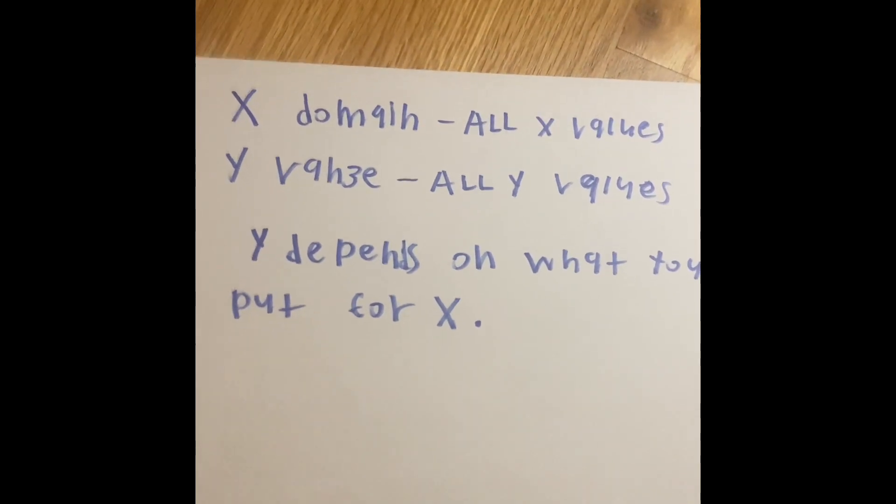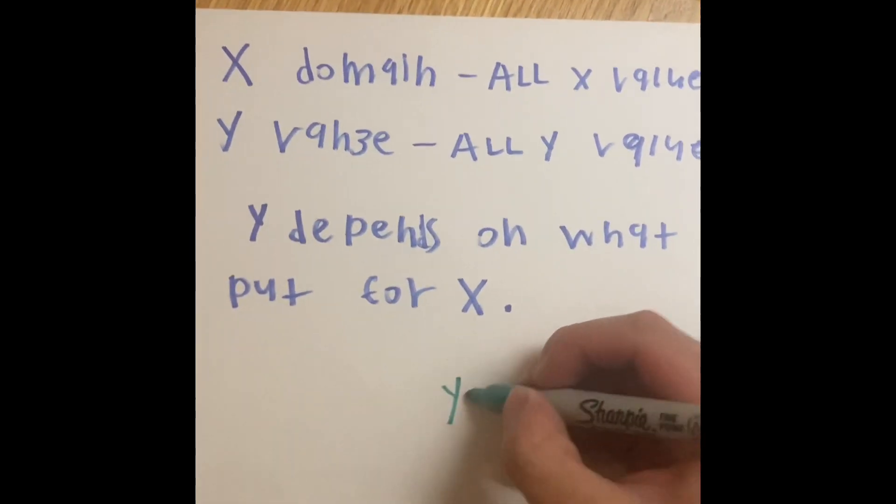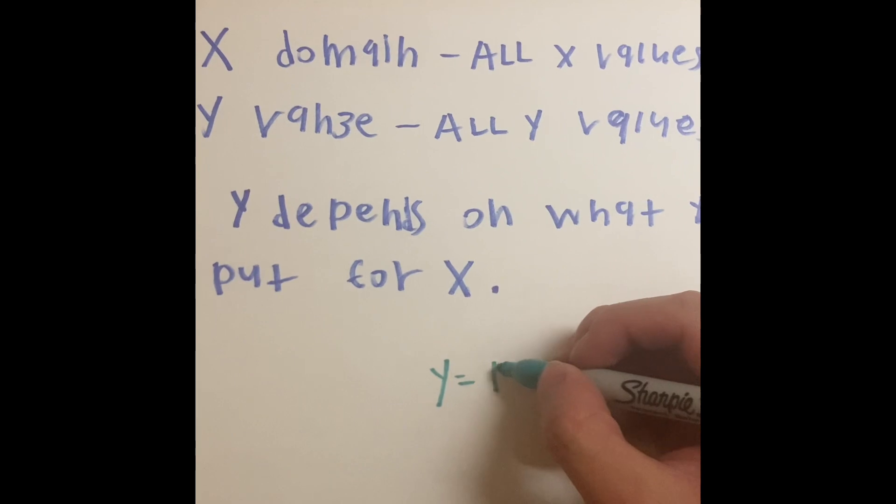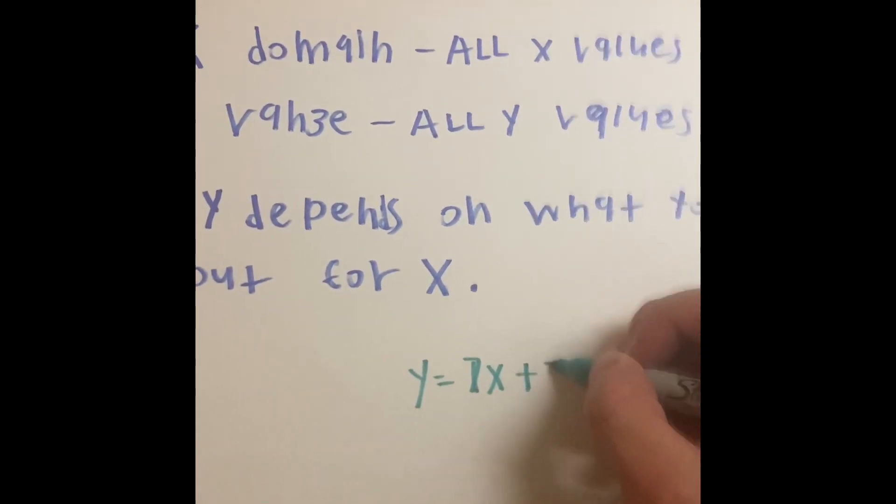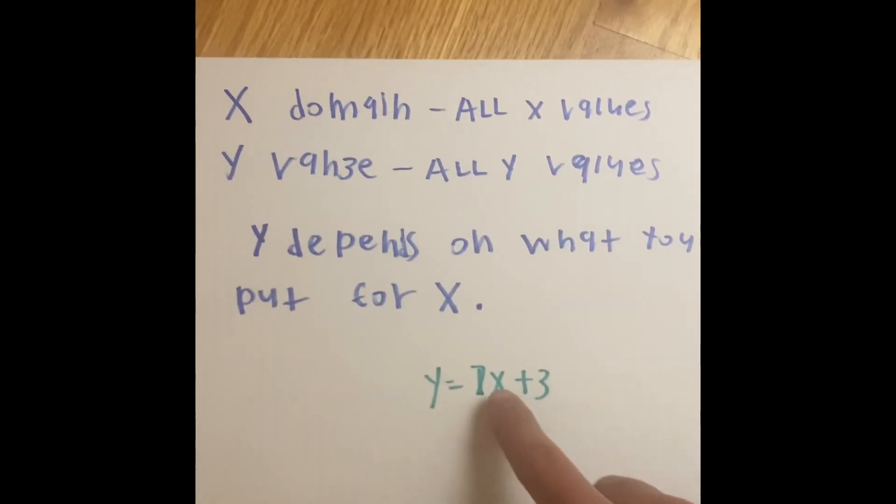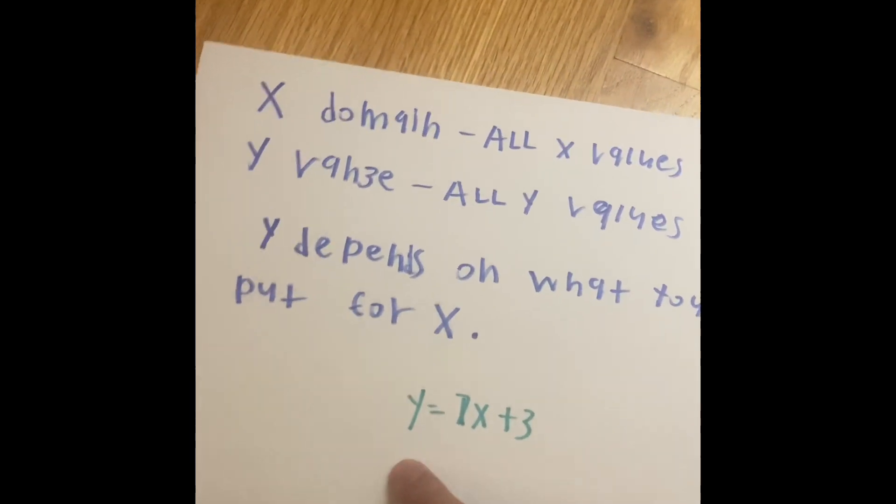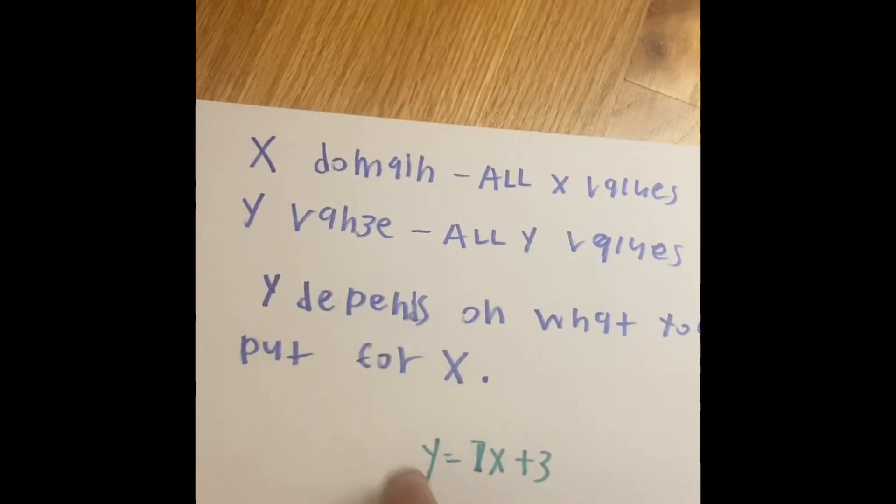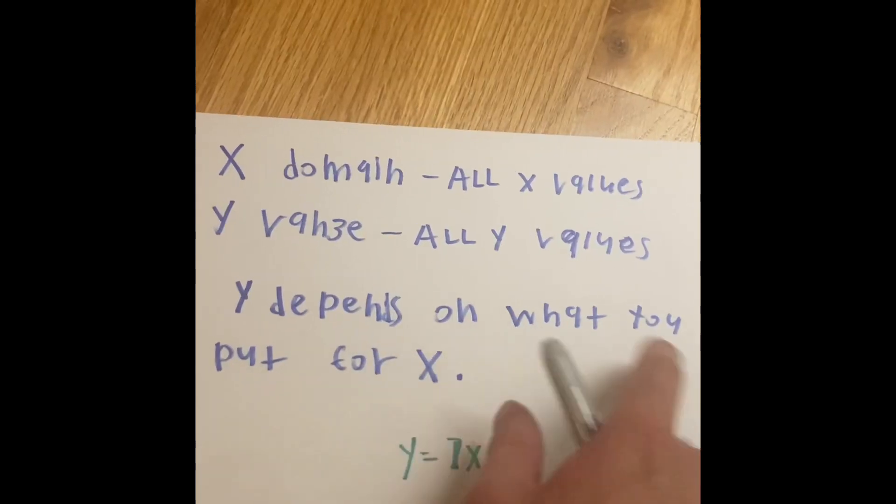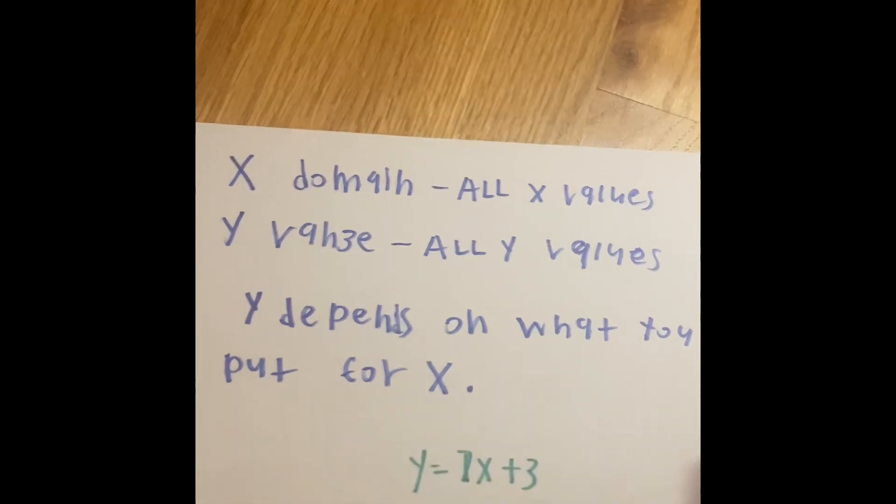An equation such as like this, y equals like 7x plus 3, whatever you put into x is going to be in for y. So that's why the y depends on what you insert and put in for x.